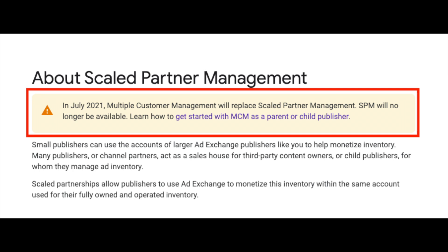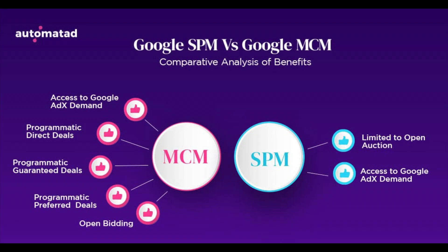SPM was a program that was available for smaller publishers to access Google Ad Exchange. It allowed smaller publishers to partner with larger publishers to use their AdEx account. This new module, MCM, is for creating more sensible relationships between publishers and publishing partners and adapting to the current market's needs. The module will still operate like SPM, but the distinction is that it gives advertisers the power to see exactly where and how their inventory is being sold.